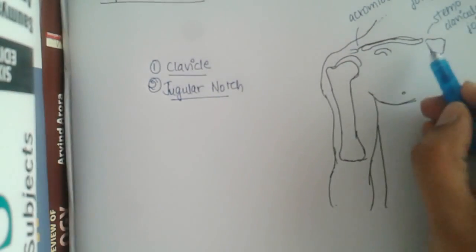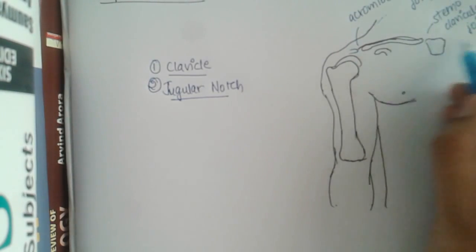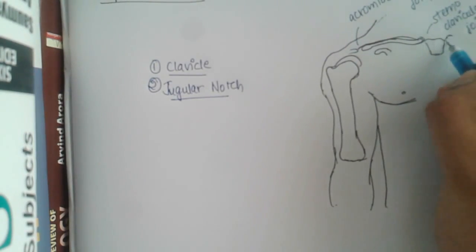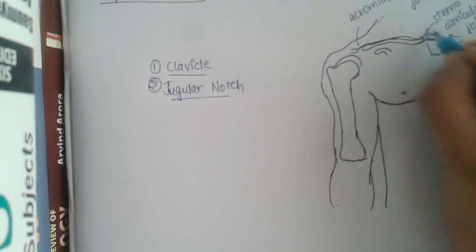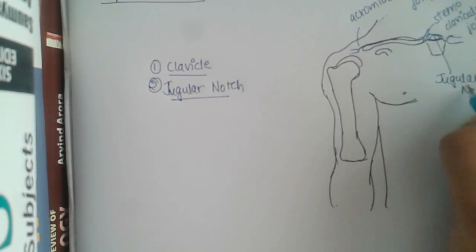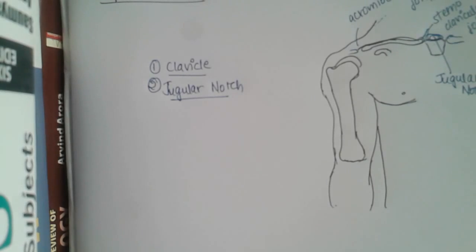The second landmark is the jugular notch. This jugular notch is present just between the two medial ends of the clavicle, and above the superior border of the sternum.